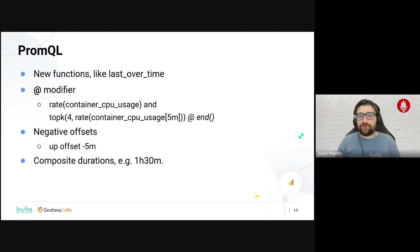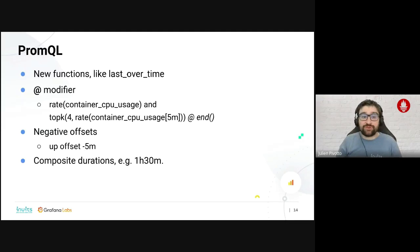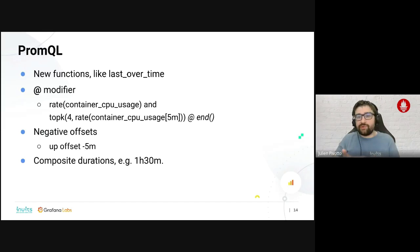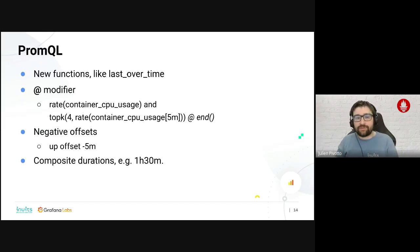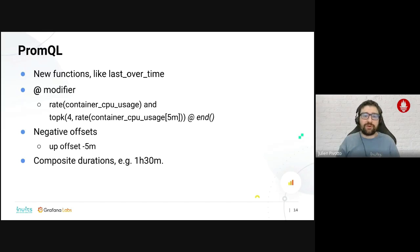We also have composite durations, which means you no longer need to calculate that one hour 30 minutes equals 90 minutes — you can directly write '1h30m'. This will ease writing and reading your PromQL queries.